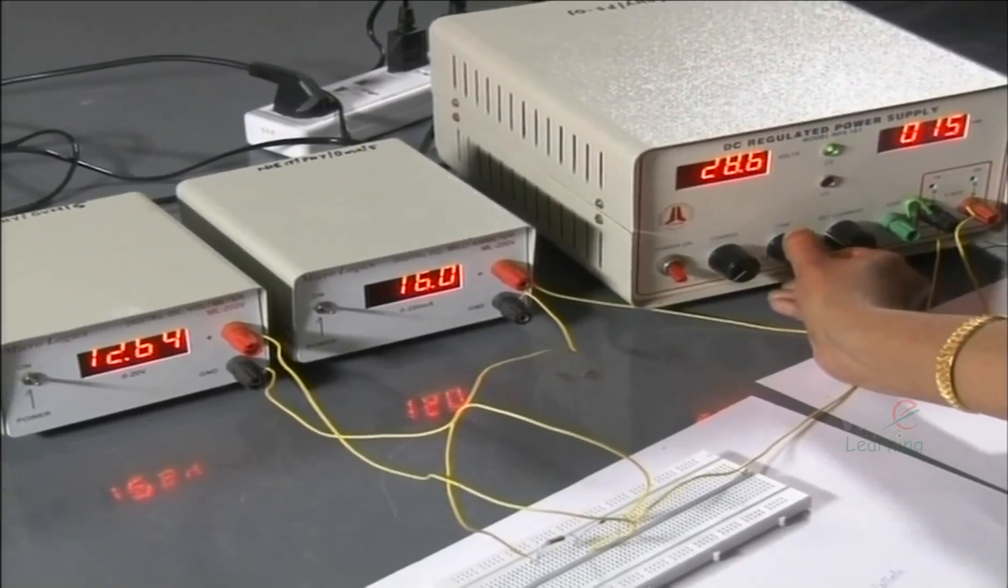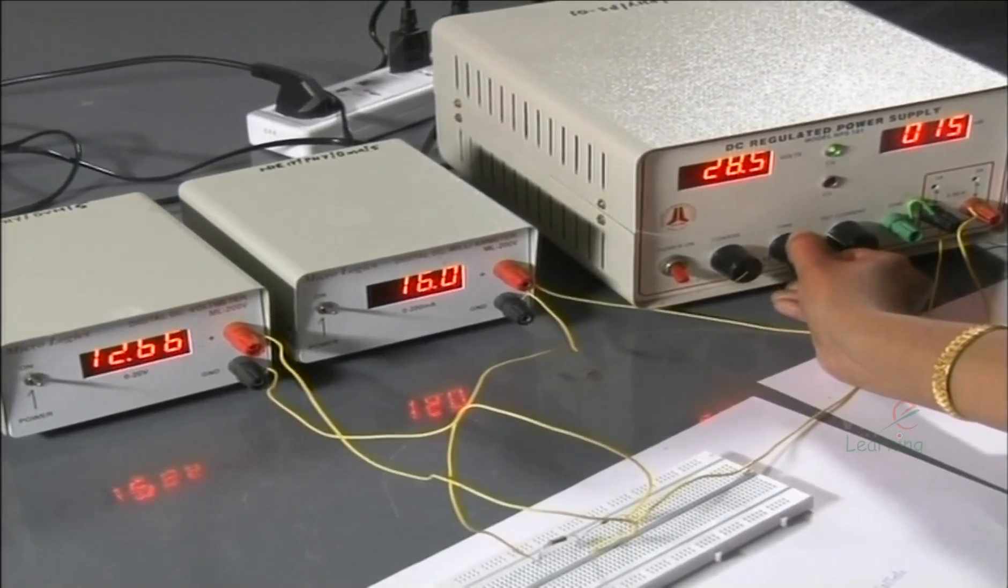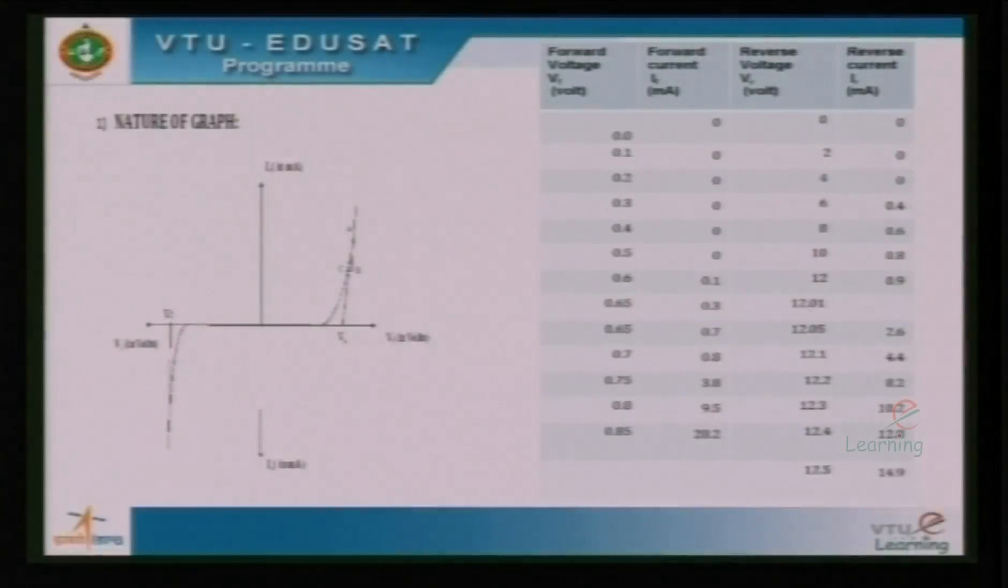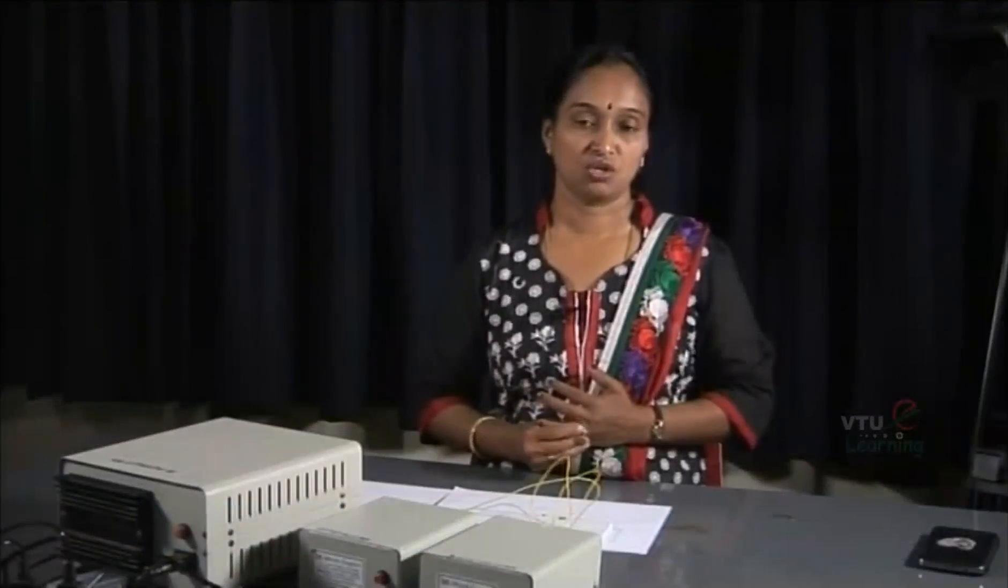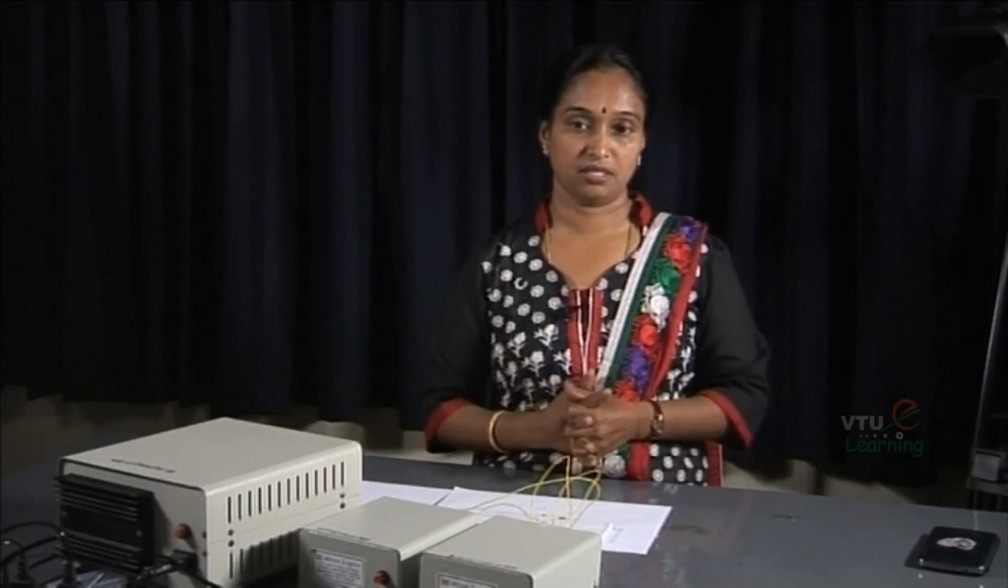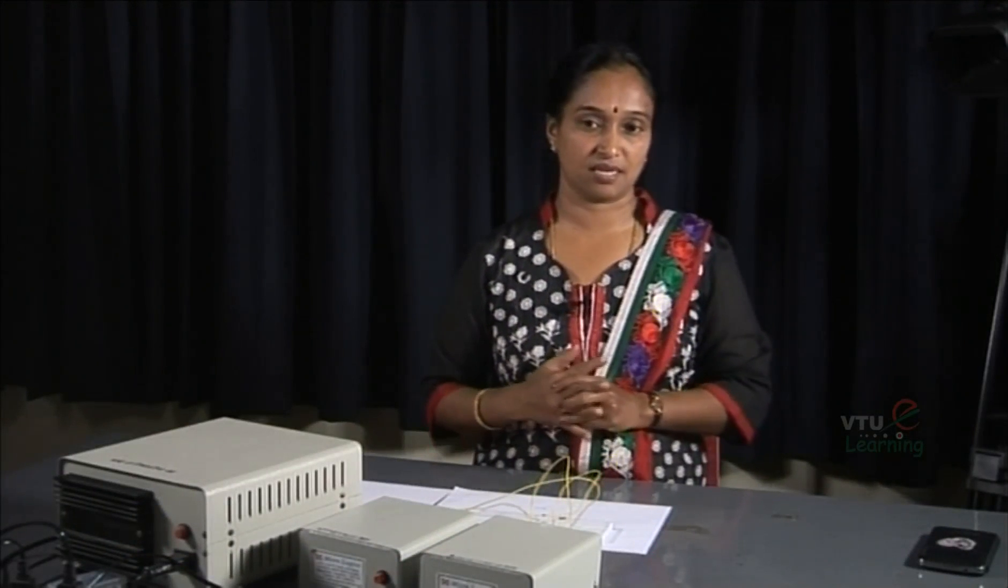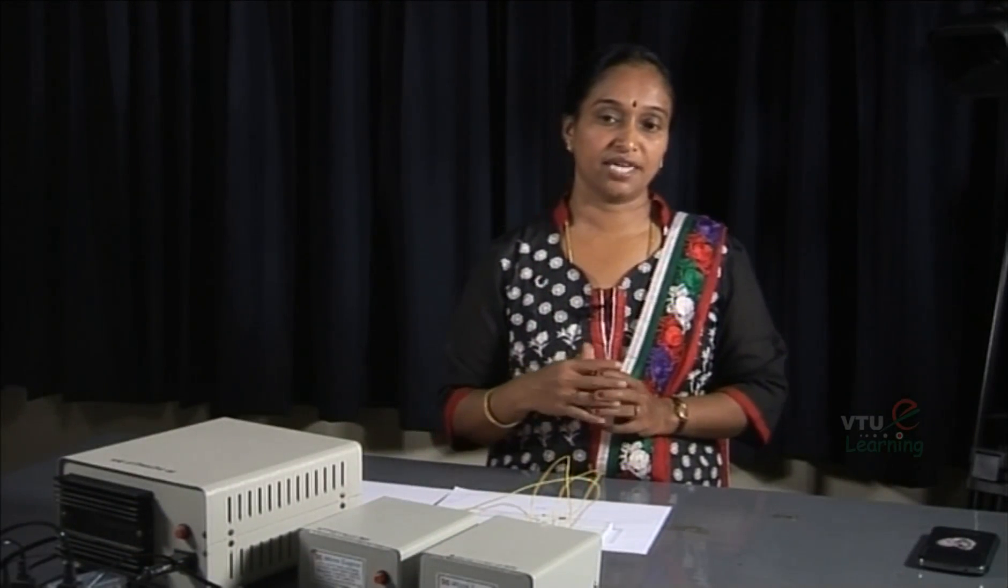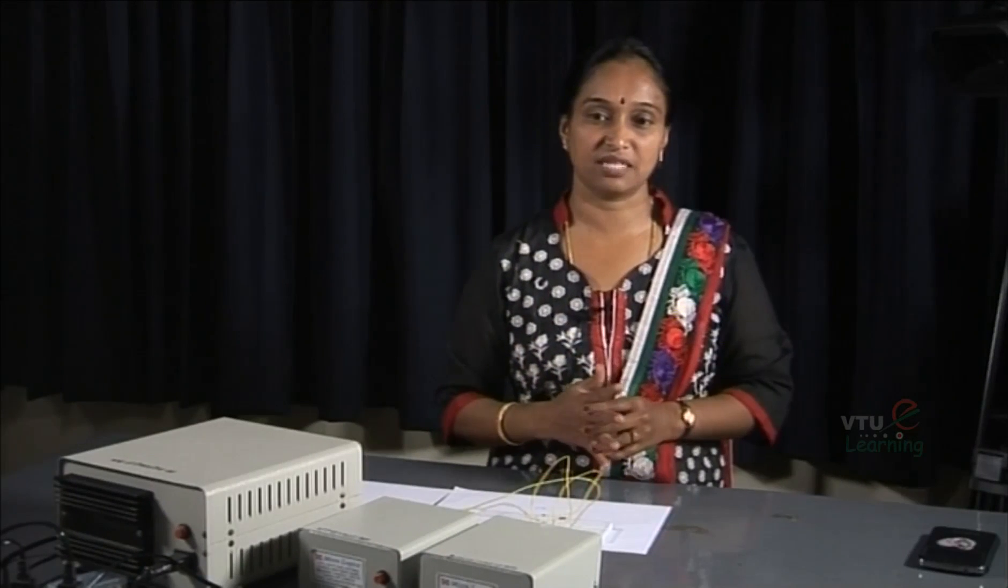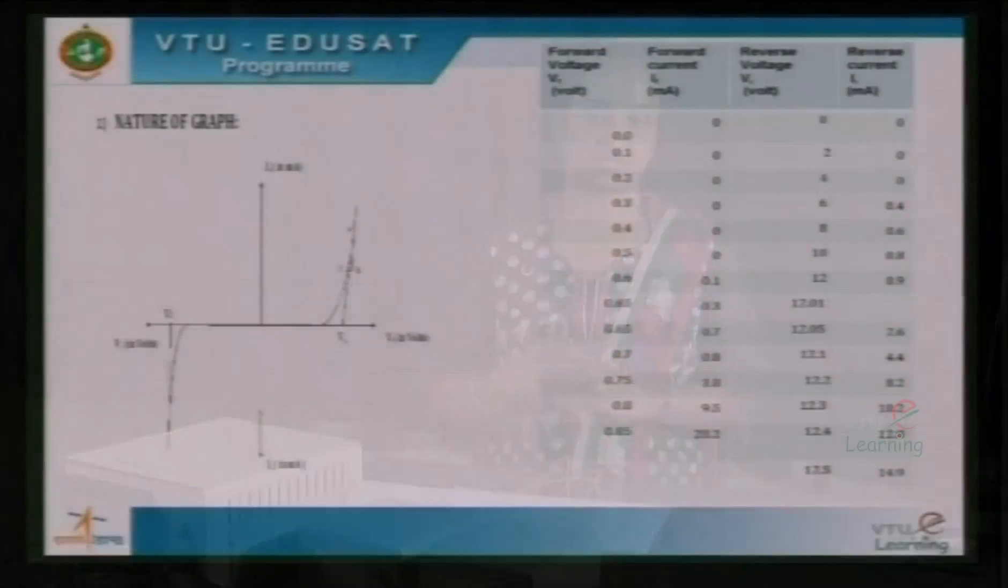Observe the table carefully. Up to 12 volts, you observe that the change in current is relatively very small. It is because of minority charge carriers called reverse saturation current. At 12 volts, the zener breakdown is occurring.